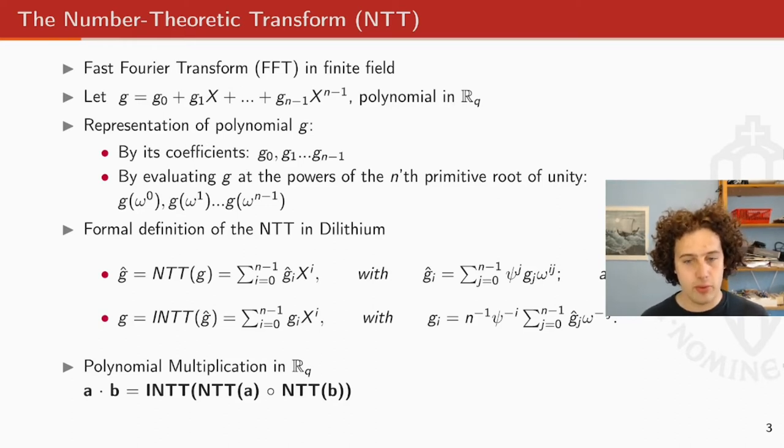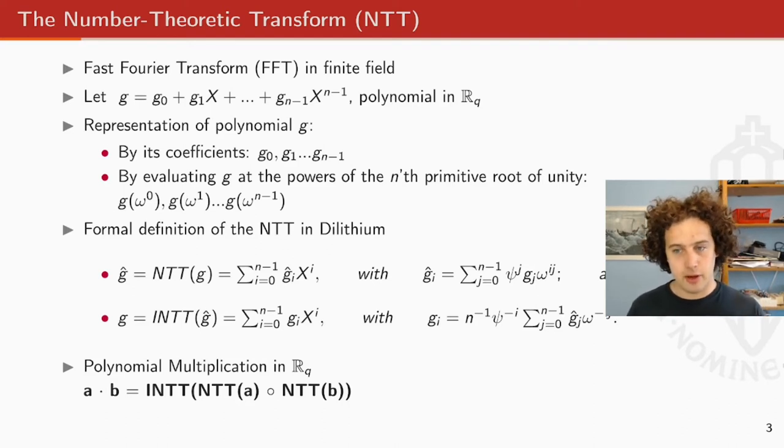What we then can use is the fact that if we want to multiply two of these polynomials, we can transform both of these polynomials into the NTT domain. Then we do point-wise multiplication and the resulting polynomial, we can transform back into the time domain to get the product between, in this case, a and b. The benefit of this is that while schoolbook multiplication has a complexity of n squared, where n is the amount of coefficients in your polynomial, the NTT and the inverse NTT algorithms, they only have an n log n complexity and then the point-wise multiplication has an n complexity. So using the NTT is faster than using more traditional means of multiplication.